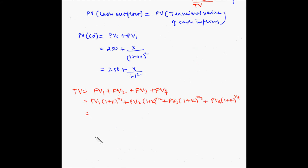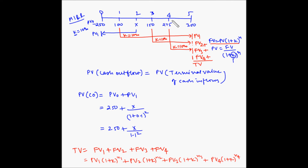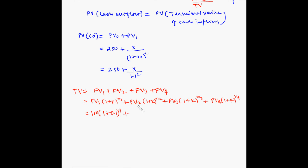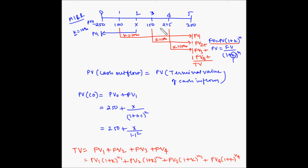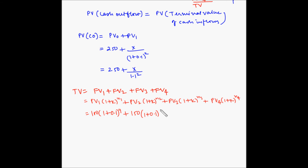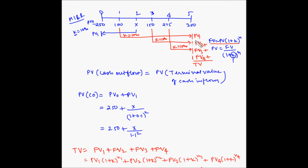So TV equals 100 into 1.1 to the power 4, plus 150 into 1.1 to the power 2, plus 275 into 1.1 to the power 1, plus 300 into 1.1 to the power 0. The 300 rupees at year five cannot be compounded for any duration since it is at the end of the tenure. This gives us a terminal value of 930.41 rupees.